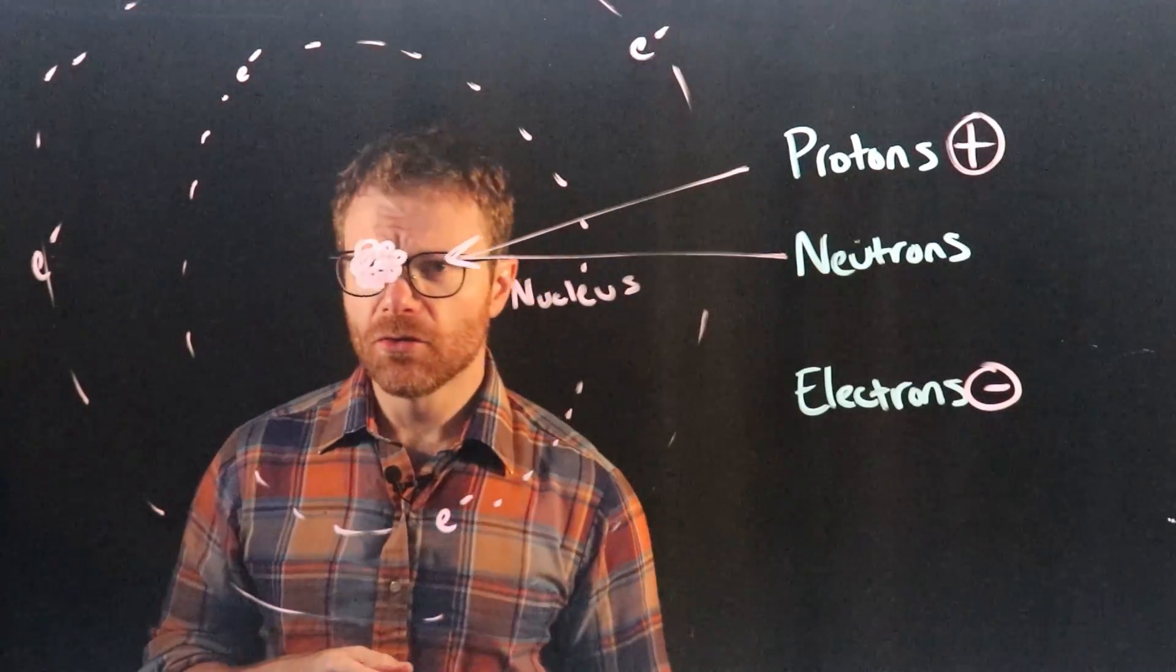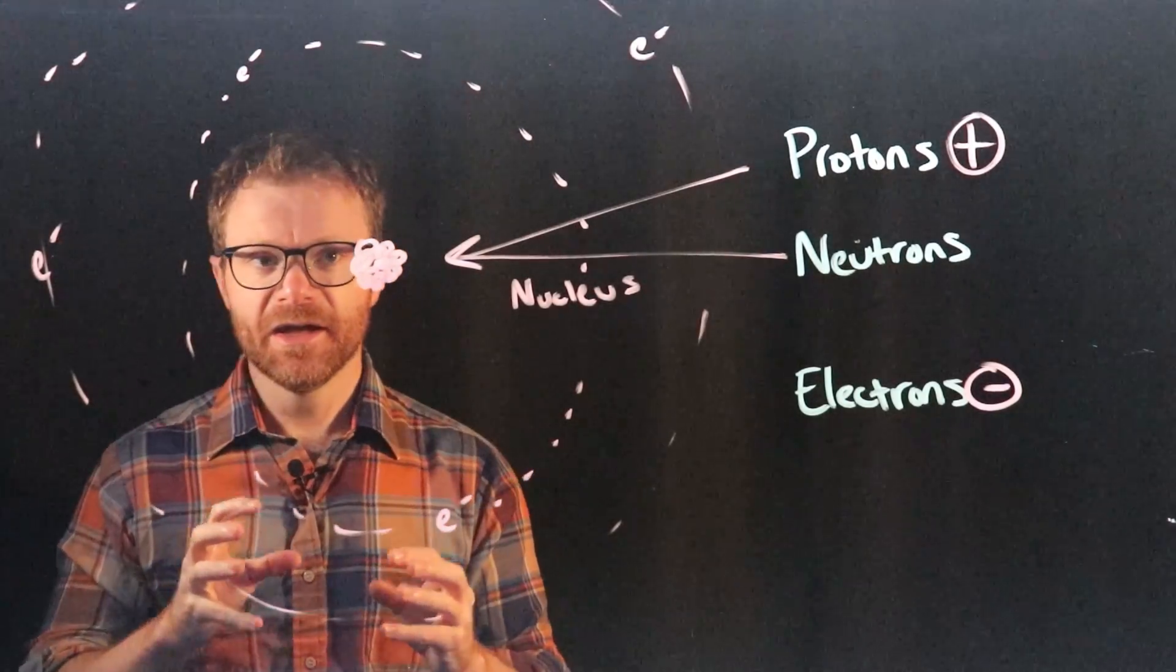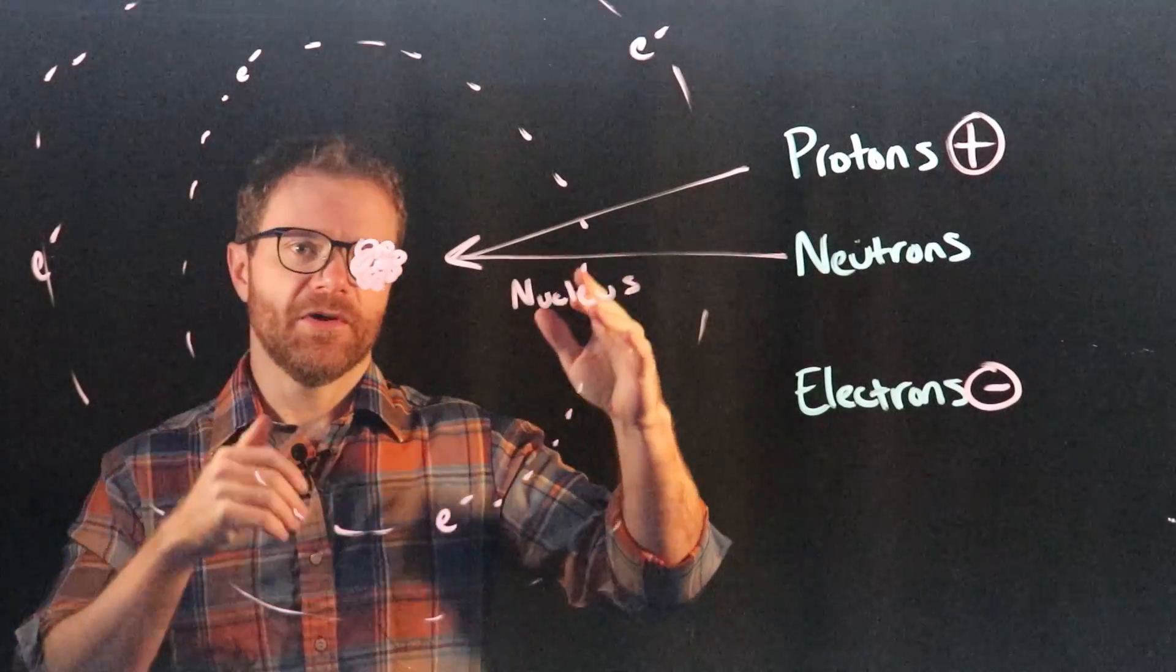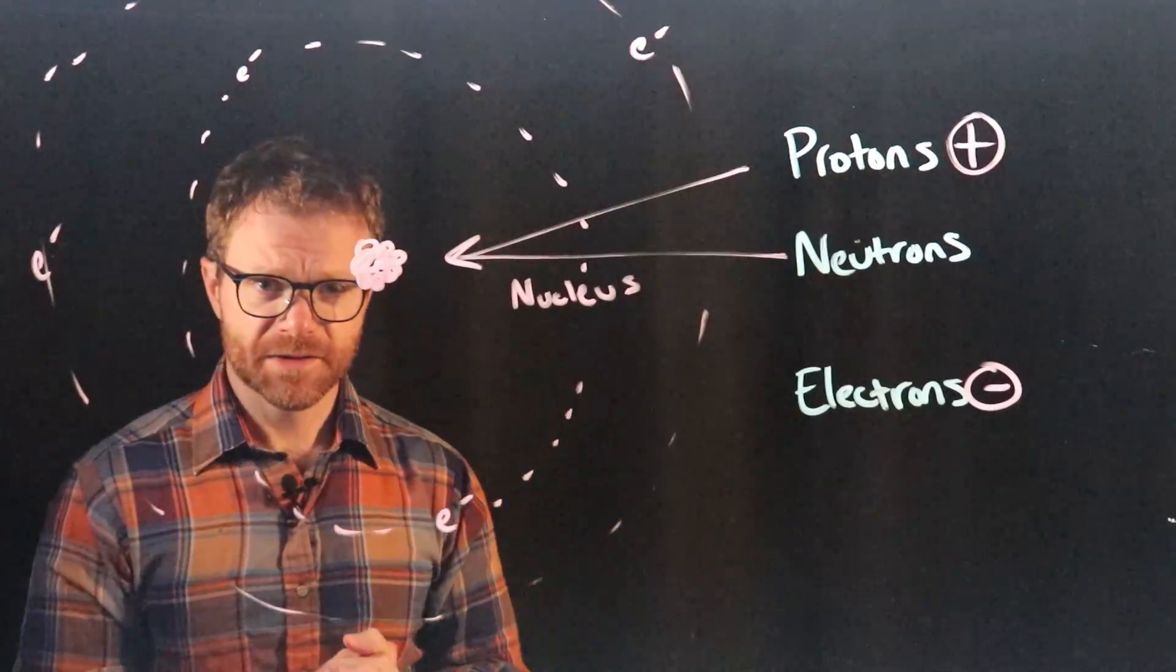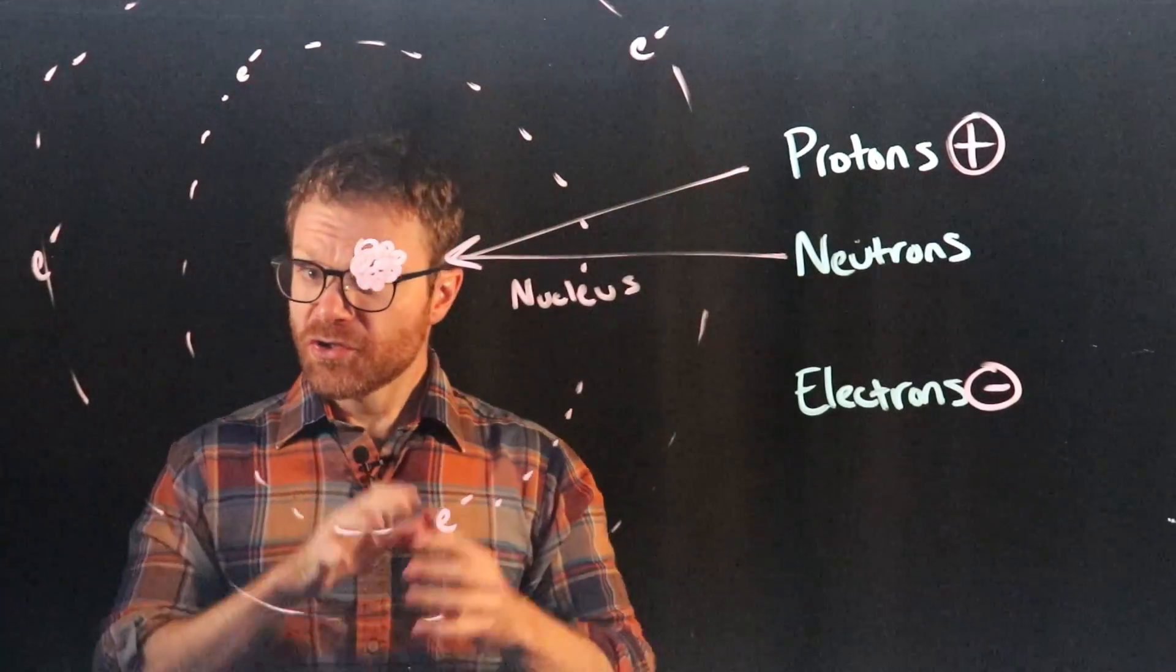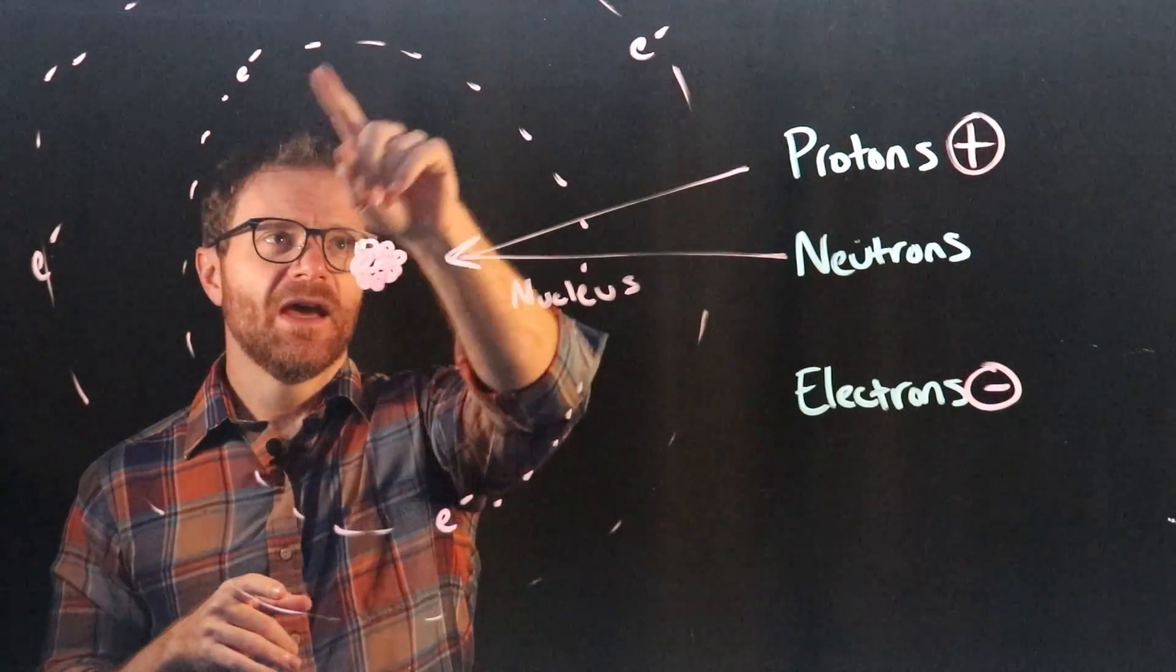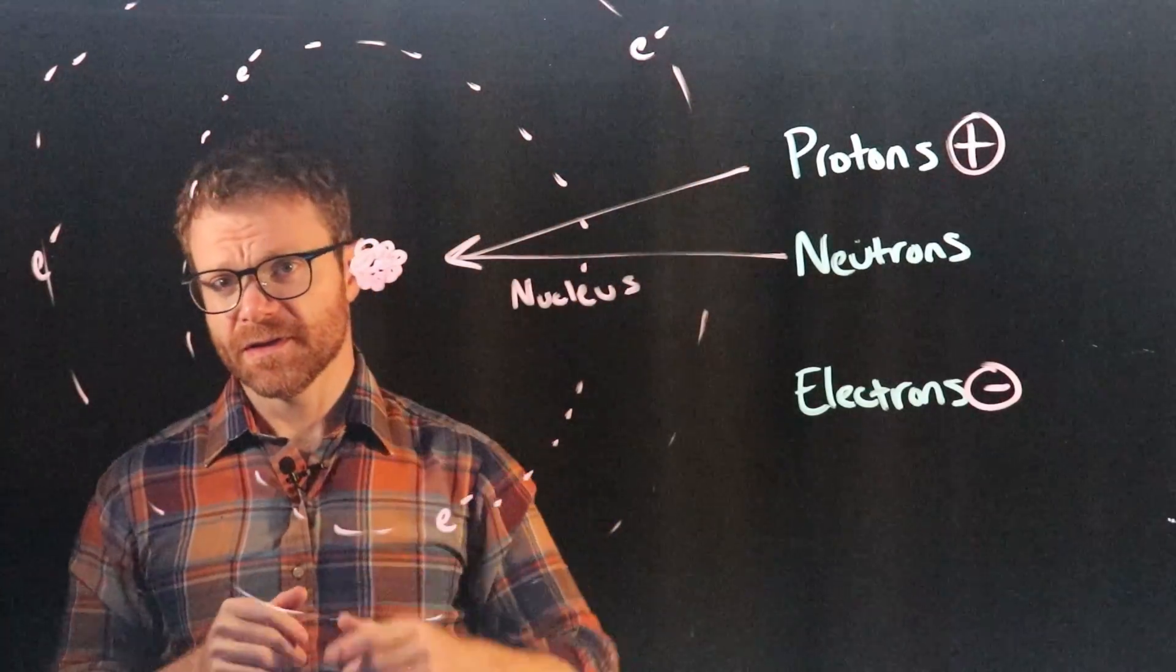Now this analogy actually holds true in many ways in the sense that the nucleus, like the sun, contains almost all of the mass of the atom, like 99.99% of the mass of the atom is contained here in the nucleus. The rest of it, the electrons have hardly any mass at all. Just like the sun contains like 99.99% of the mass of the solar system, and the planets, even big ones like Jupiter, contain very little mass compared to the sun.